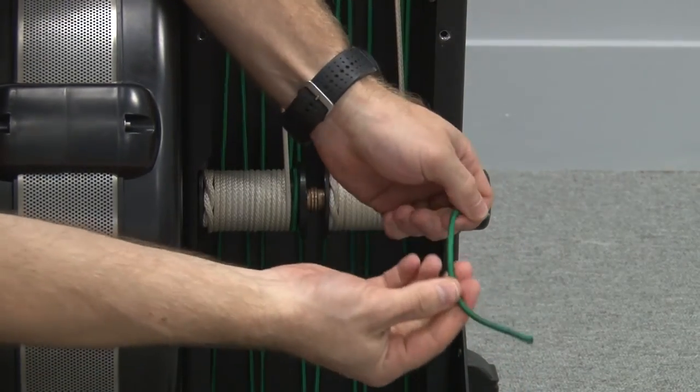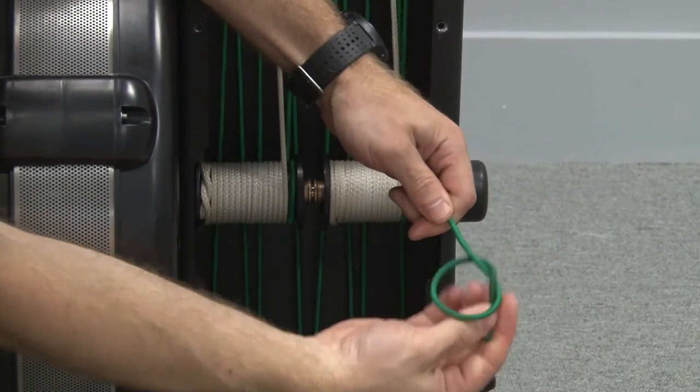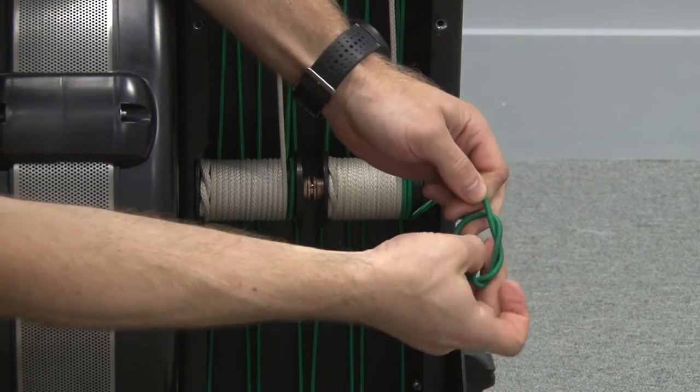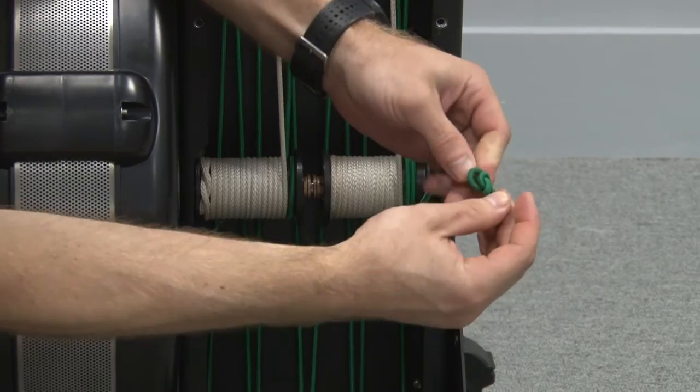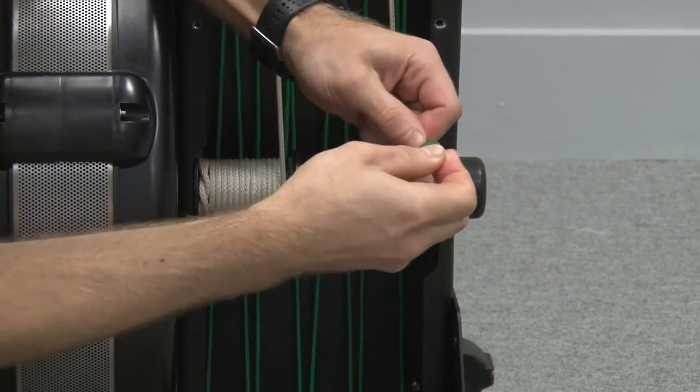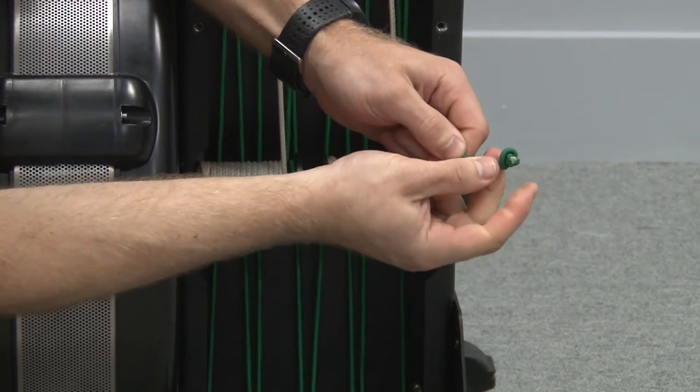To do that it's just a double overhand knot, so you tie one overhand knot and then send the tail around one more time and tighten that down so it's a big knot at the end of the shock cord. We want to make sure that's tight and that this tail is as short as possible.